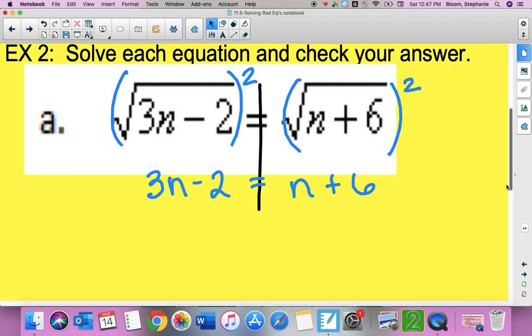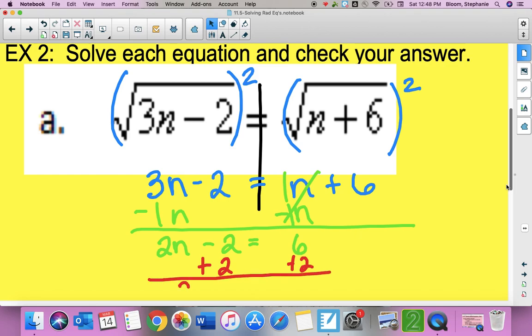So 3n minus 2 is equal to n plus 6. And then we're going to solve. So I have variables on both sides of the equal sign. So I'm going to move this n over by subtracting n. Remember that's a 1n there. So then I have 2n, bring down my minus 2, is equal to 6. And then we're just going to solve like we always would. So we're going to add 2 to both sides. And so 2n is equal to 8. And then final step is to divide by 2. So n would be 4.